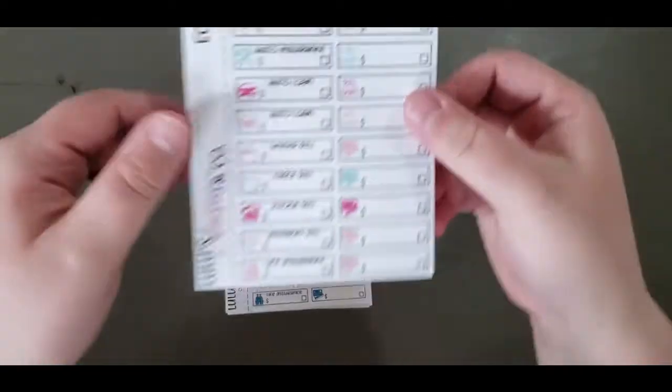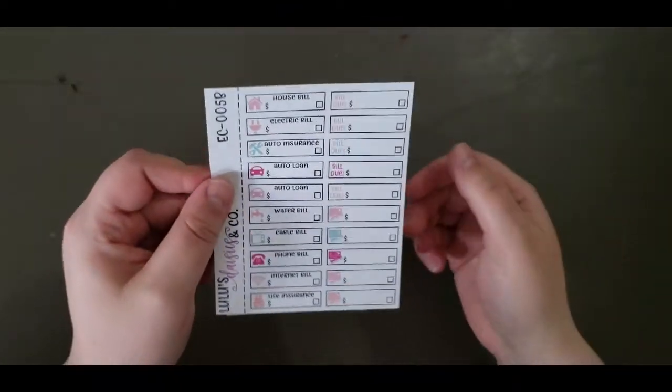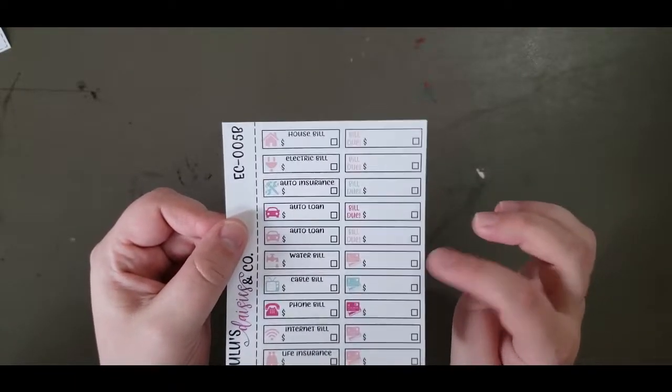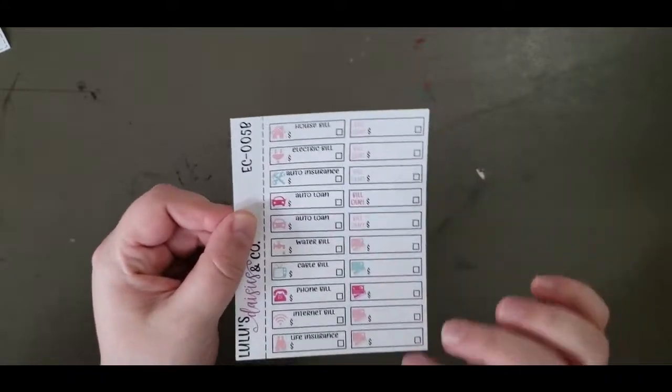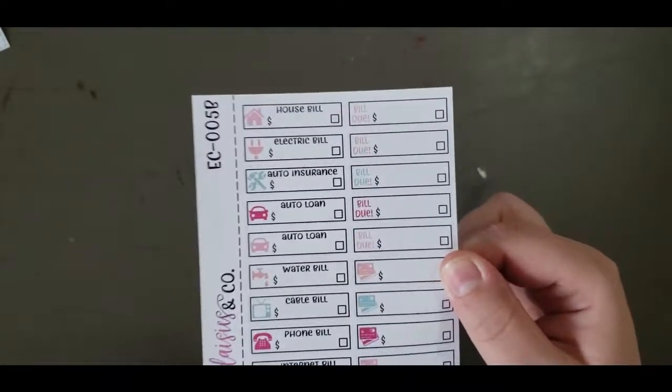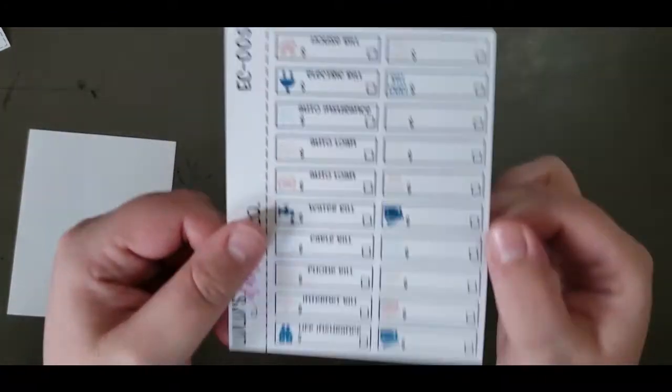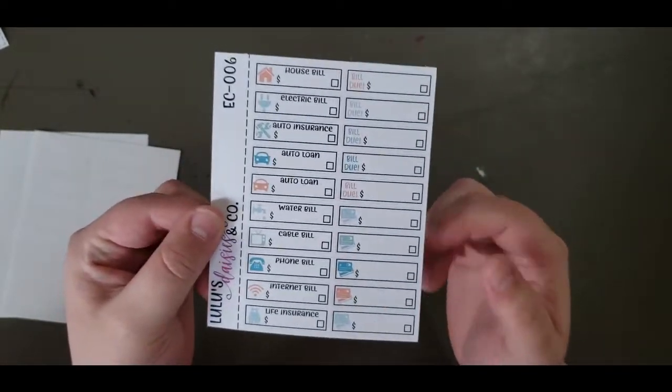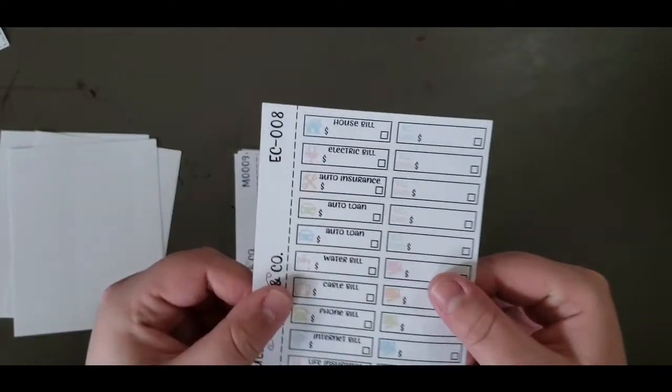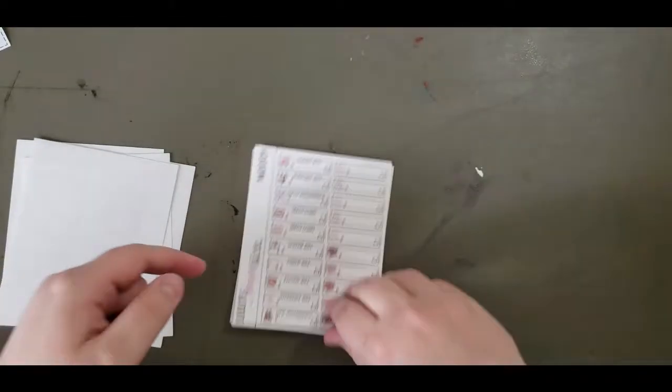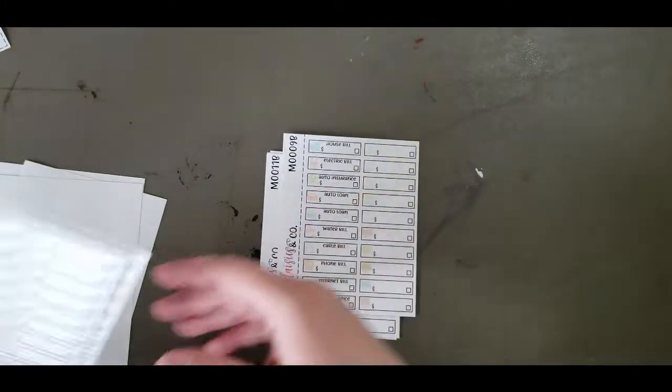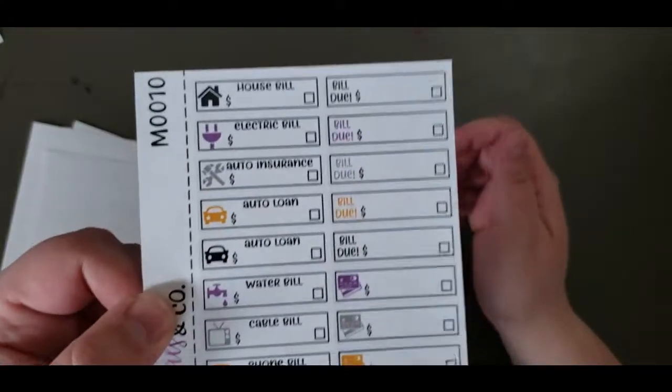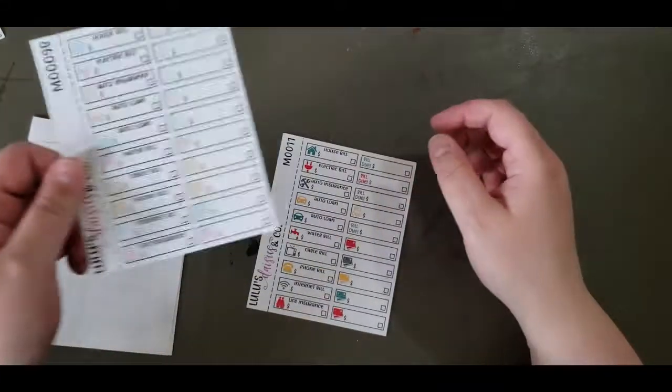The first one I have is the house bills. So you have rent or mortgage, electric, auto insurance, auto loan, water bill, cable bill, phone bill, internet bill, life insurance, some random bill dues and some credit cards in kind of a pinky tealy magenta theme. And then we have the same sheet in peachies and blues, the same sheet in more of a summery one with orange and blues, then we have pastel, reds, another pastel, then a more fall one, then a halloween one, another summer one again, another pastel and then a bold.